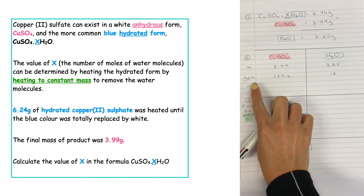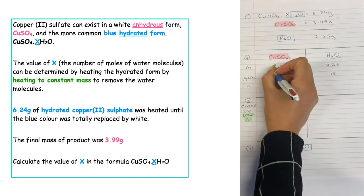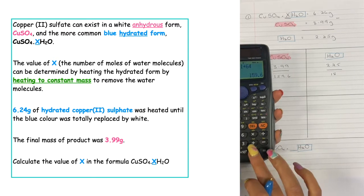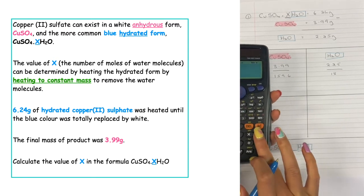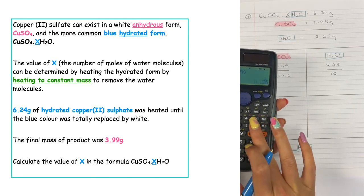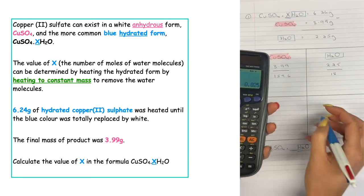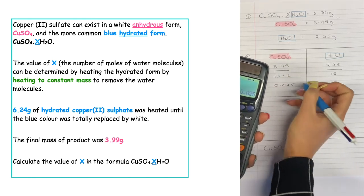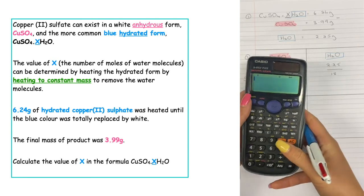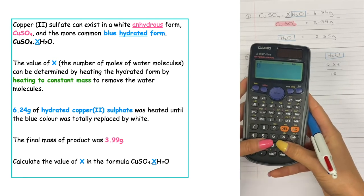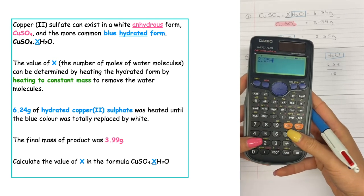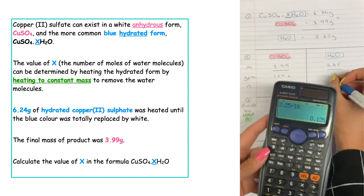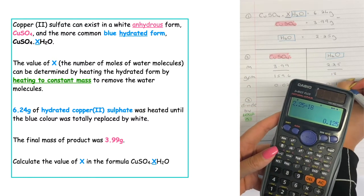To calculate the number of moles we do mass divided by GFM. So 3.99 divided by 159.6 gives us 0.025 moles of copper sulphate. And 2.25 divided by 18 gives us the number of moles of water as 0.125.